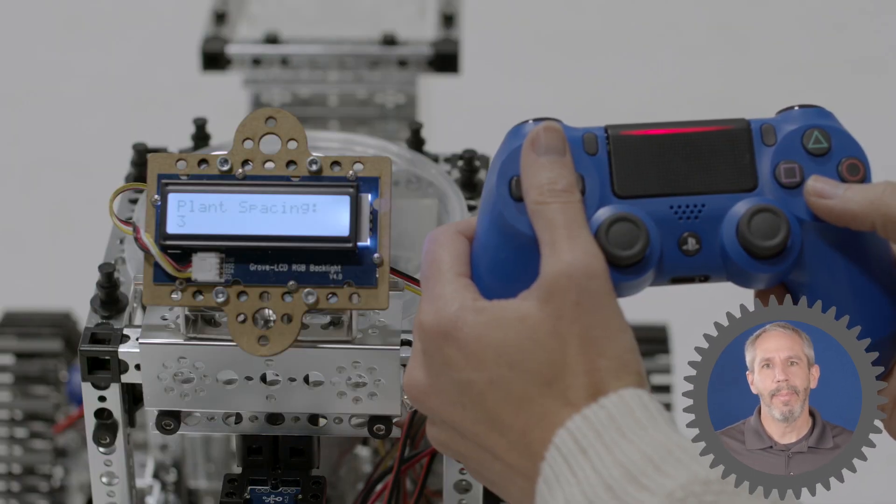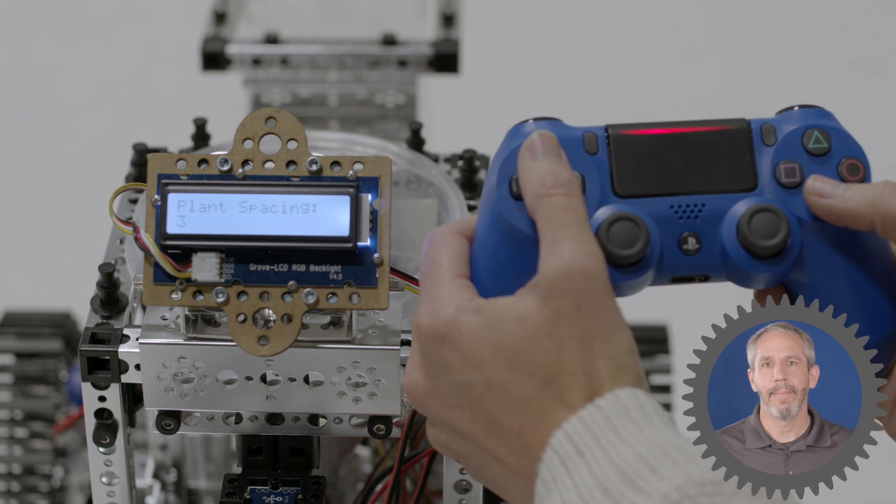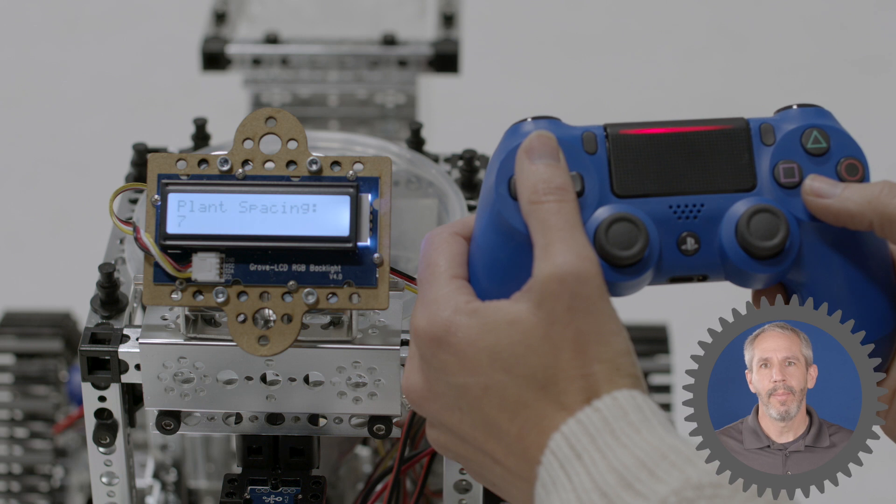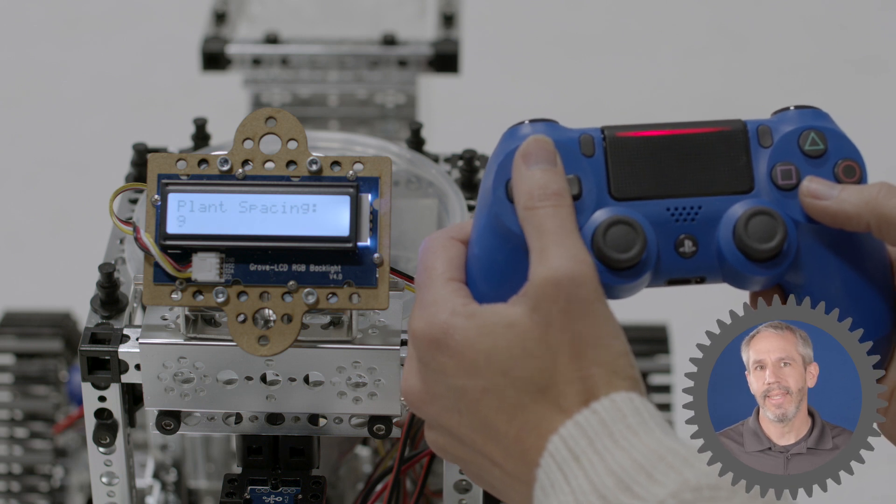So as I input that plant spacing into the program, then the program can calculate how many encoder counts the motors need to rotate to achieve that exact distance.